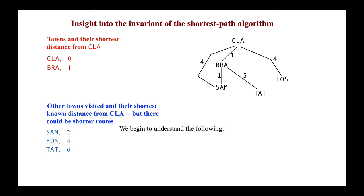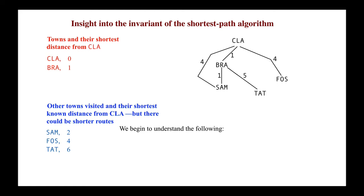We began to understand the following: choose a node in the blue set with minimum distance. In this case, Sam. That distance is the shortest distance from the start node to that node.